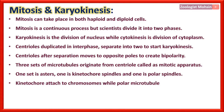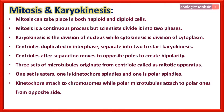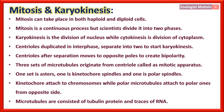Kinetochore microtubules attach to chromosomes, while polar microtubules attach to polar ones from opposite sides and elongate. Microtubules consist of tubulin protein and traces of RNA — these traces of RNA need your attention.